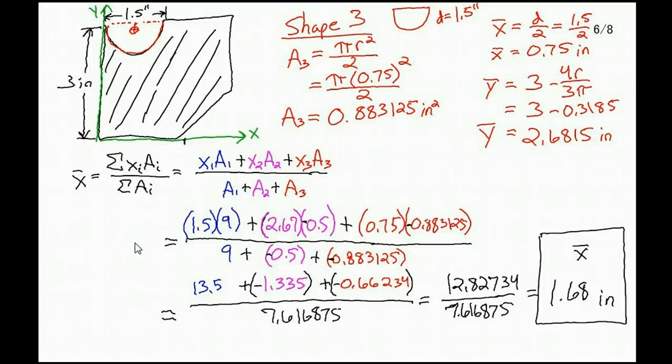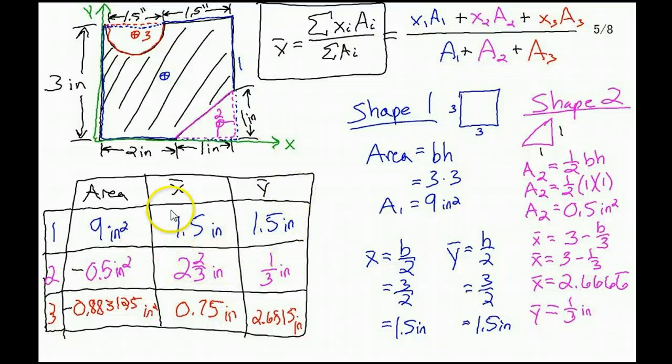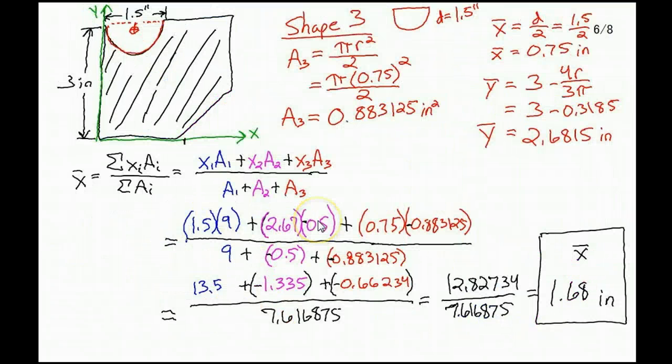Using the information from my table, this is 1.5 times 9, and then the second one is 2.67 times negative 0.5—don't forget that negative because that shape's not actually there—then 0.75 times negative 0.883125. If you do the math for all this, plugging everything in diligently, keeping it neat, pay attention to the negative signs because you're subtracting area since those shapes aren't actually there, and you get something like 1.68 inches. That's our x-coordinate, our weighted average.